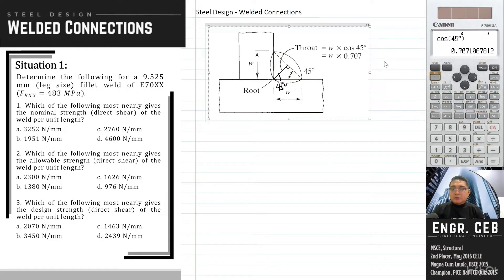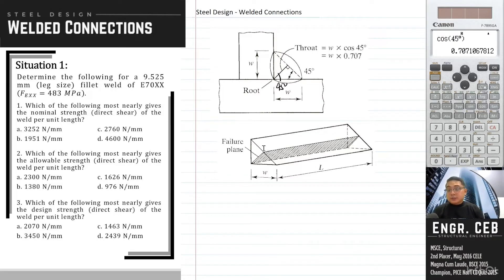We are computing for the throat thickness because the failure plane will occur on this throat. At the event of failure, the weld will be sheared on this plane. As you can see, this is the throat thickness that we have computed.